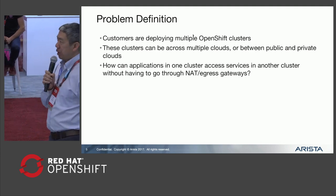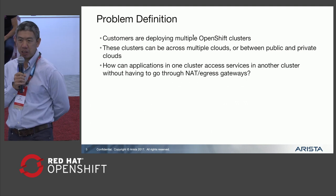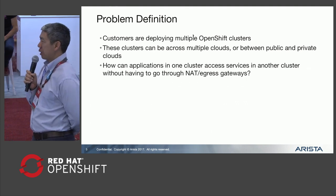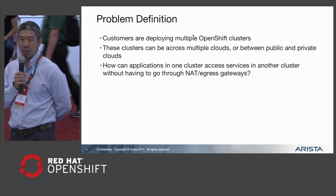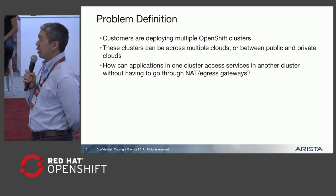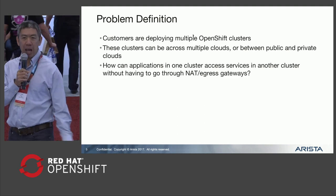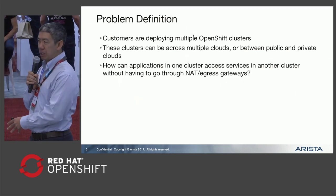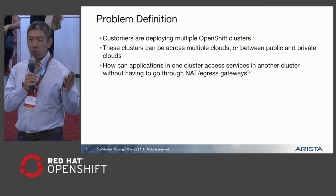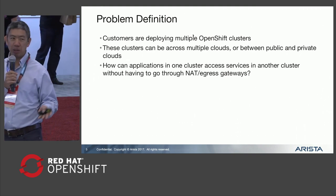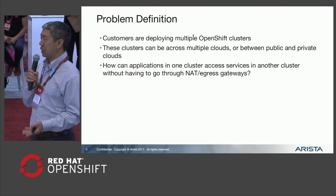The problem we're trying to solve with OpenShift is: when customers are deploying multiple clusters, how do they interconnect those different clusters together? These clusters could be spread across different clouds or across data centers. What we want to provide is a way for customers to access resources across clusters without necessarily having to go through NAT gateways or change their IP addresses. We want pods and services to be able to use private IP addressing and cluster IPs to contact each other.